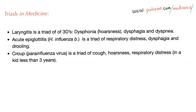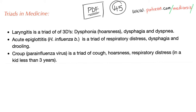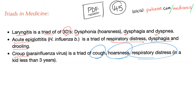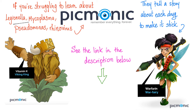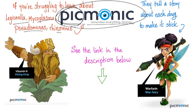On my Patreon website, I have a PDF called Triads in Medicine, with more than 45 diseases organized by clinical triads. For example: acute epiglottitis is a triad of respiratory distress, dysphagia, and drooling; croup is a triad of cough, hoarseness, and respiratory distress in a child under 3 years of age. Also check out Picmonic — pictured mnemonics for medical, nursing, and pharmacy students. See the link in the description below.